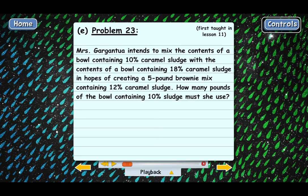Problem 23. We need to solve this word problem. Mrs. Gargantua intends to mix the contents of a bowl containing 10% caramel sludge with the contents of a bowl containing 18% caramel sludge in hopes of creating a 5-pound brownie mix containing 12% caramel sludge. How many pounds of the bowl containing 10% sludge must she use?